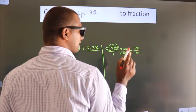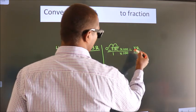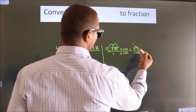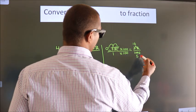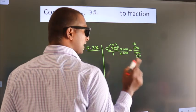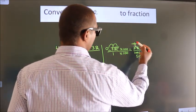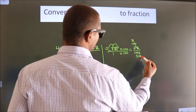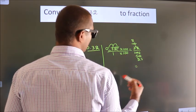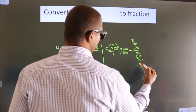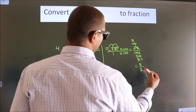Now I cancel with 2. 2 ones, 2 sixes, 2 fives. This zero as it is down. I cancel with 2 again. 2 eights, 2 twenty-fives. So the fraction we got is 8 by 25.